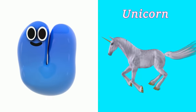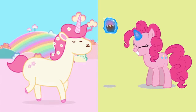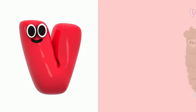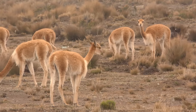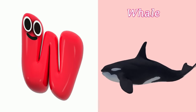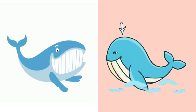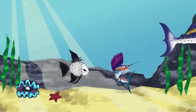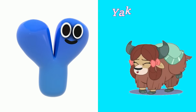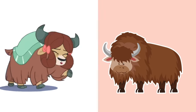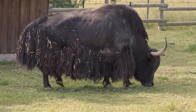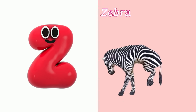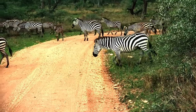U is for Unicorn. U, U, Unicorn. V is for Vicuna. V, V, Vicuna. W is for Whale. W, W, Whale. X is for Xerus. X, X, Xerus. Y is for Yak. Y, Y, Yak. Z is for Zebra. Z, Z, Zebra.